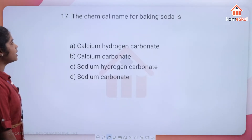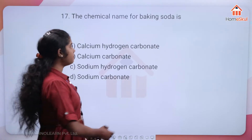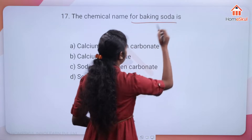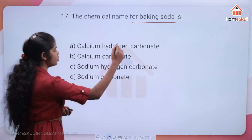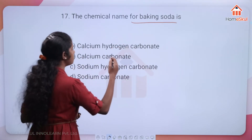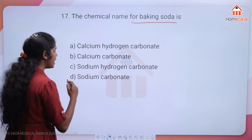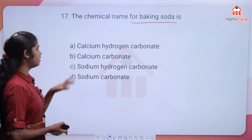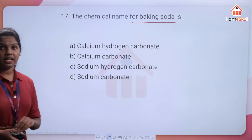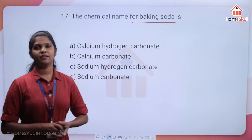Question 17: the chemical name for baking soda is — calcium hydrogen carbonate, calcium carbonate, sodium hydrogen carbonate, or sodium carbonate?